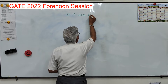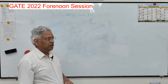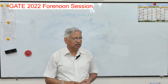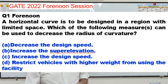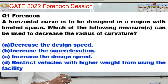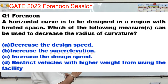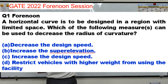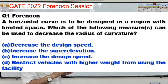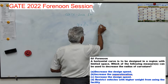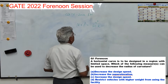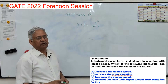The first question in the forenoon session is: a horizontal curve is to be designed in a region of limited space. Which of the following measures can be taken to decrease the radius of curvature? The equation relating super elevation with speed and radius is E plus F equals V squared upon 127R.